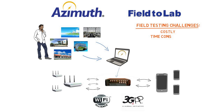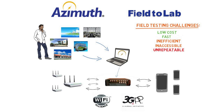Field-to-lab is a revolution to field testing — collect the RF once and replay it many times. Not only is field-to-lab fast, but it's highly accurate and customizable. You retain full control over every RF characteristic of each link, so you can test corner cases and custom scenarios that might be difficult to capture in the field. Best of all, field-to-lab is 100% repeatable.